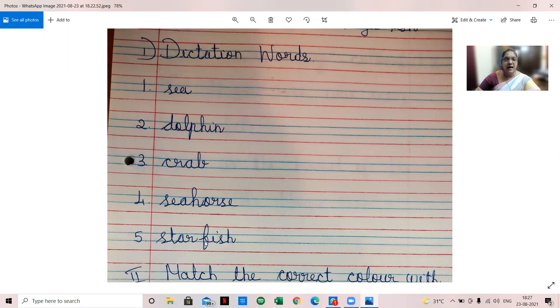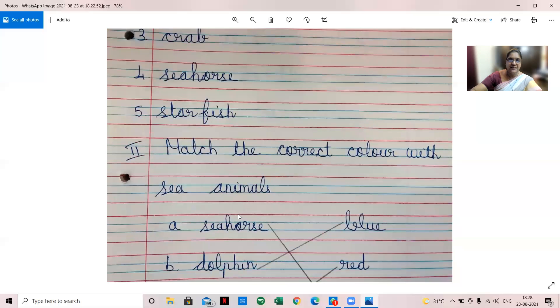Sea, dolphin, crab, seahorse, starfish - you have to know the spelling of them. So let us see, match the correct color with sea animals. I have just given a match for you so that without the picture also you should know what are the colors and what are the animals.